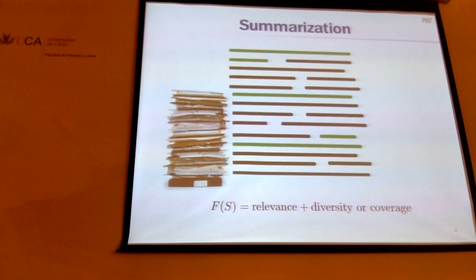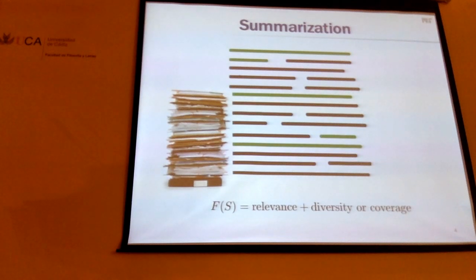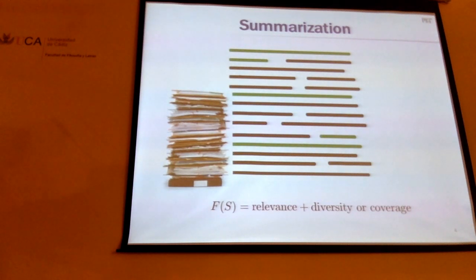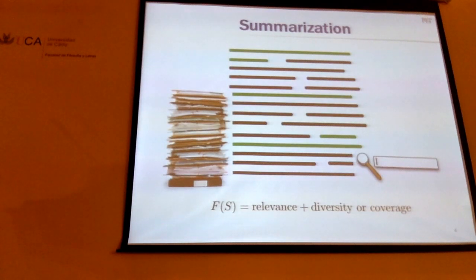There are many other problems where this comes up. For example, you have a large set of documents and you're trying to extract a summary — a small set that represents the content as well as possible. In this case, you want the subset to be non-redundant and to represent the content. So your set function probably measures something like non-redundancy or diversity and some kind of relevance score. This is also very useful for search, recommendation, and so on.